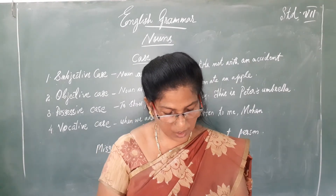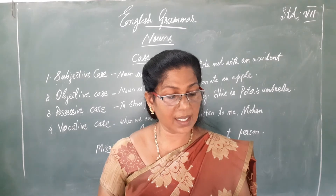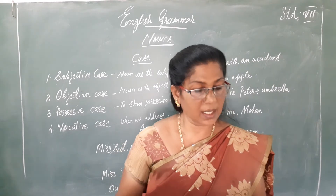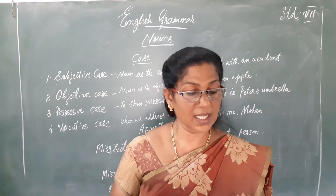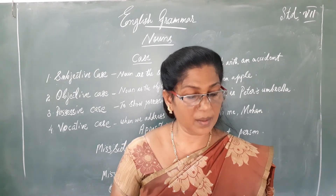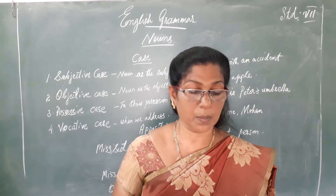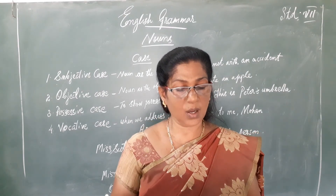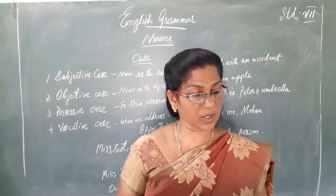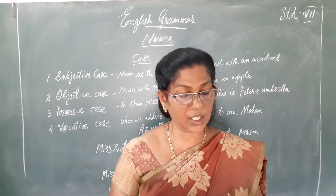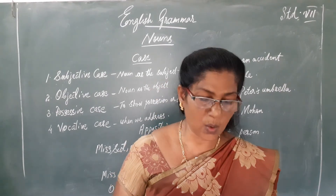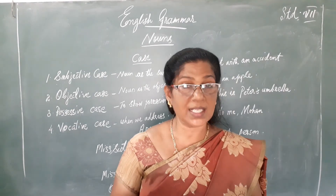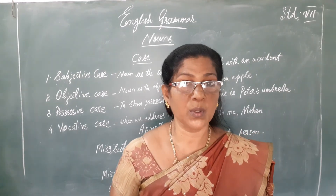Now let's do the exercise. Worksheet — first one: write the kind of each of the following nouns. Army — collective noun. City — common noun. Family — common and collective noun. Kuchhi — proper noun. Teacher — common noun. Company — collective noun. Indian Ocean — proper noun. Document — collective noun. Then write C against countable and U against uncountable nouns. Now name the gender and write the feminine gender. Children, you try to answer these questions by yourself. The answers will be uploaded through WhatsApp.